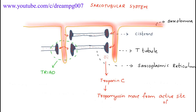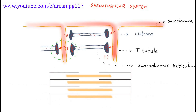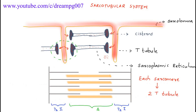This finally leads to uncovering of the active site present in the actin filament. Actin-myosin cross-linking takes place and muscle contraction begins. The sarco-tubular system is seen inside the sarcomere, and each t-tubule is seen at the junction of the A-band and I-band, so each sarcomere has two t-tubules.